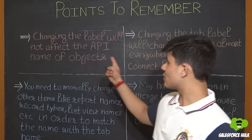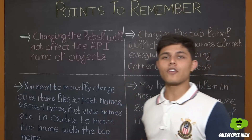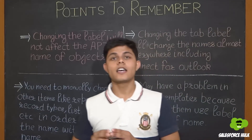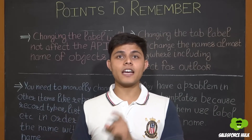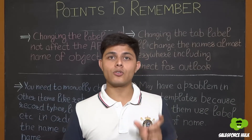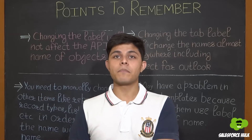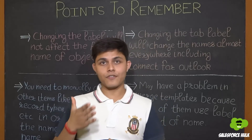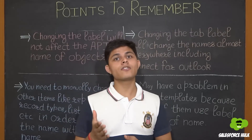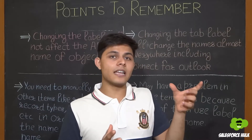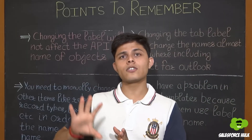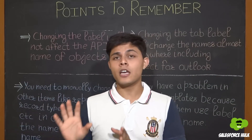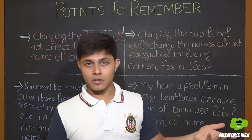Fifth, changing the label will not affect the API name of the objects. If you change 'Accounts' to 'Companies,' it will not be changed in the API — in the API it will still be 'Account.' So if you're a developer, you need to do your coding according to the standard object's API name, not the new tab label.